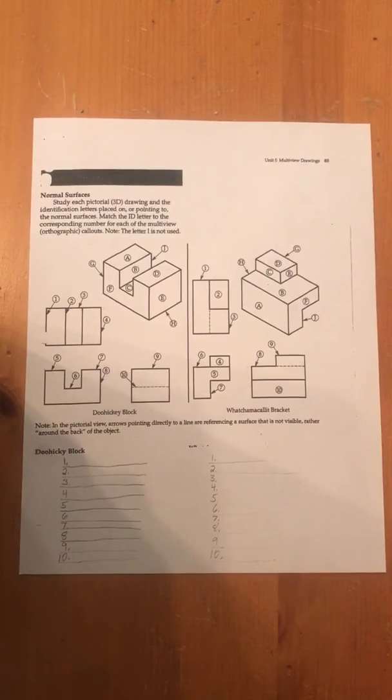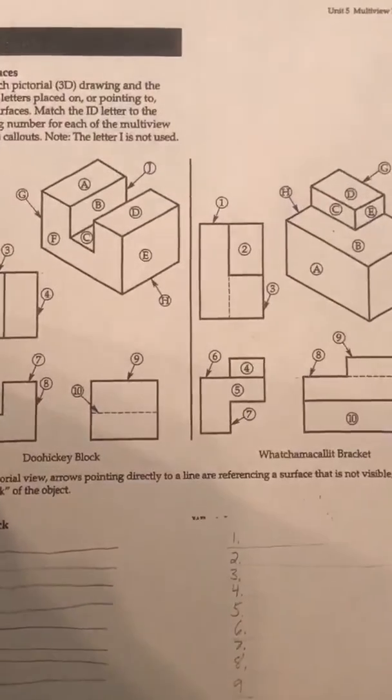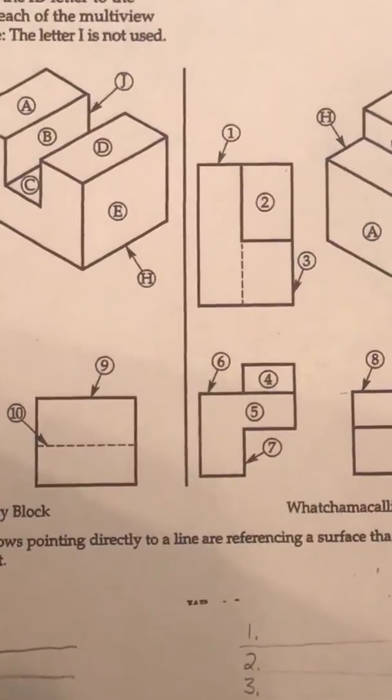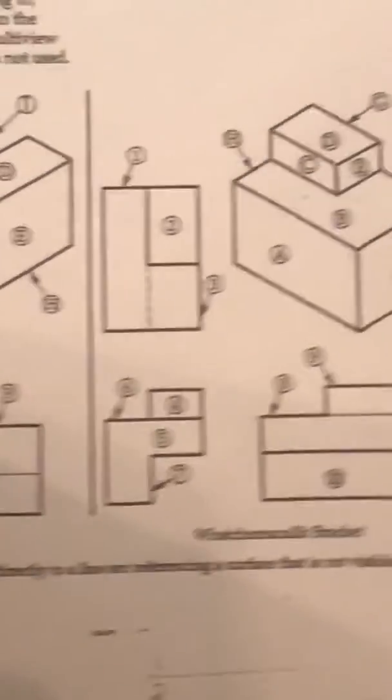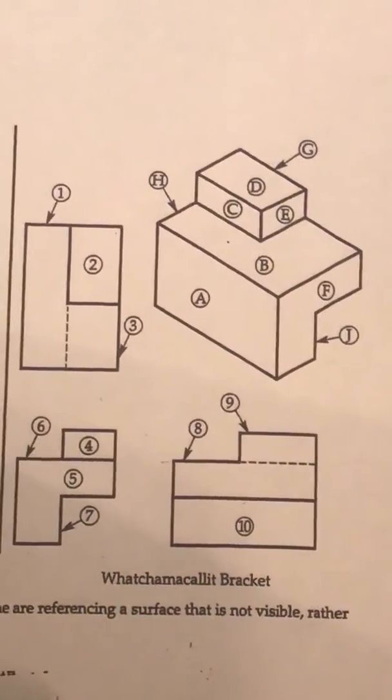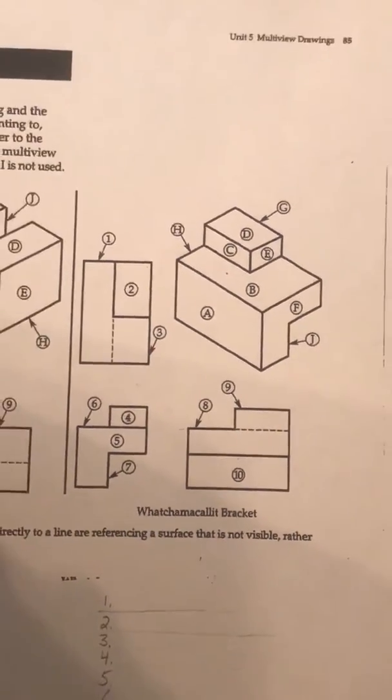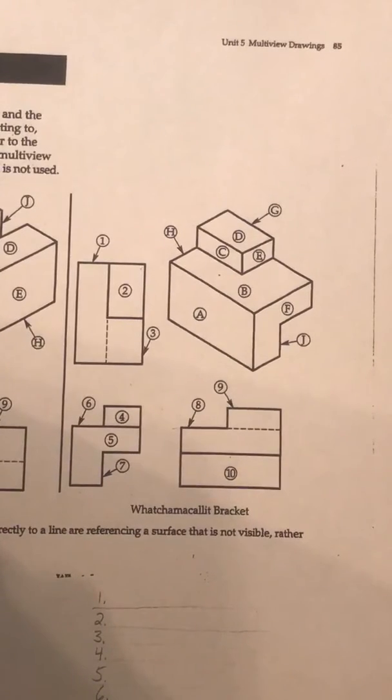We're going to see how we draw that doohickey block and how it relates. So we're going to start this. Let me zoom in. There's our doohickey block on the left-hand side, and this is our watchmacullet bracket on the right. I'm going to do this with the watchmacullet bracket, and then you can go ahead and fill the information out on the doohickey block.